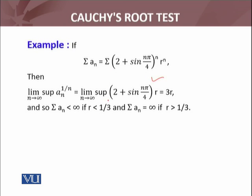When we discussed that series, we talked about the different forms of the terms, which repeated infinitely many times. Using that, I can conclude that limit superior as n approaches infinity of this term will be 3r.